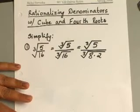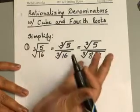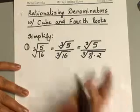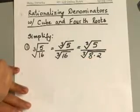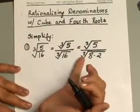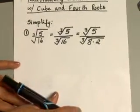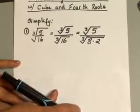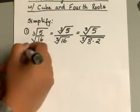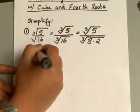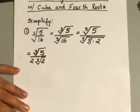Sometimes people get confused with cube roots and square roots. Remember, a cube root is where you take a number to the third power — 2 to the third is 8, and cube root of 8 is 2. Since we're talking about third powers, when you rationalize these denominators it's going to look very different from square roots. Once you simplify, you end up with cube root of 5 over 2 times cube root of 2.